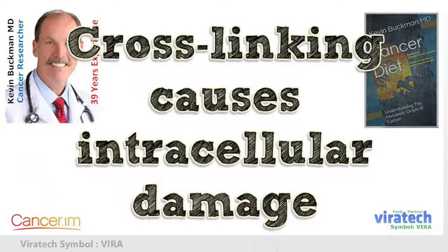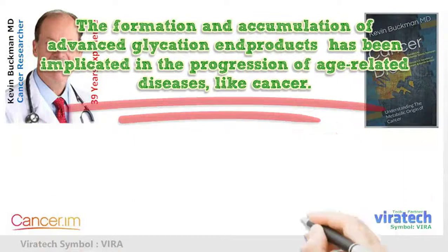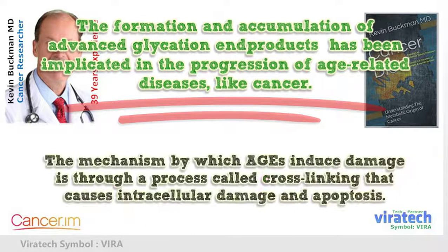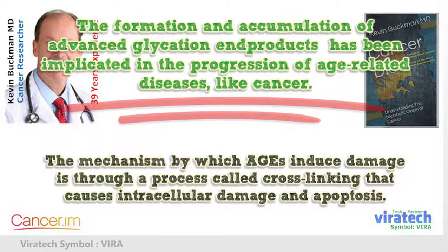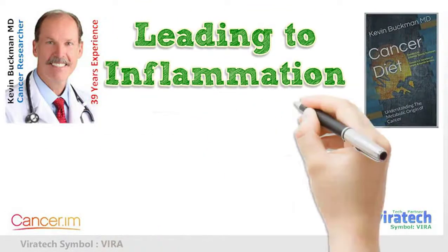The formation and accumulation of advanced glycation end products has been implicated in the progression of age-related diseases, like cancer. The mechanism by which AGEs induce damage is through a process called crosslinking that causes intracellular damage and apoptosis, leading to inflammation.